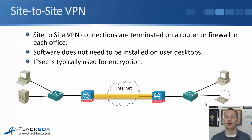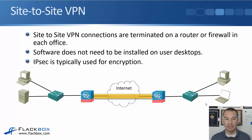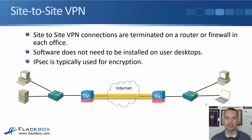There are a couple of different types of VPN: site-to-site VPN and remote access VPN. Site-to-site VPN connections are terminated on a router or firewall in each office. Software does not need to be installed on user desktops. The configuration is all done on the firewall or router, and traffic between the PCs and servers in New York and Boston goes over the VPN tunnel without needing extra software on the PCs. For site-to-site VPN tunnels, we'll typically be using IPSec for encryption.